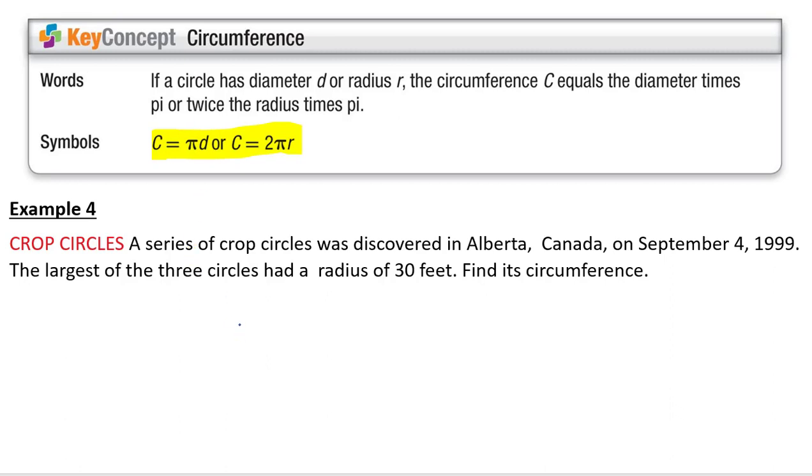So crop circles. A series of crop circles were discovered in Alberta, Canada on September 4, 1999. The largest of the three circles has a radius of 30 feet. Find its circumference. Circumference equals 2 pi r. Circumference equals 2 pi times 30, which is 60 pi feet. And I want you guys leaving things in terms of pi.